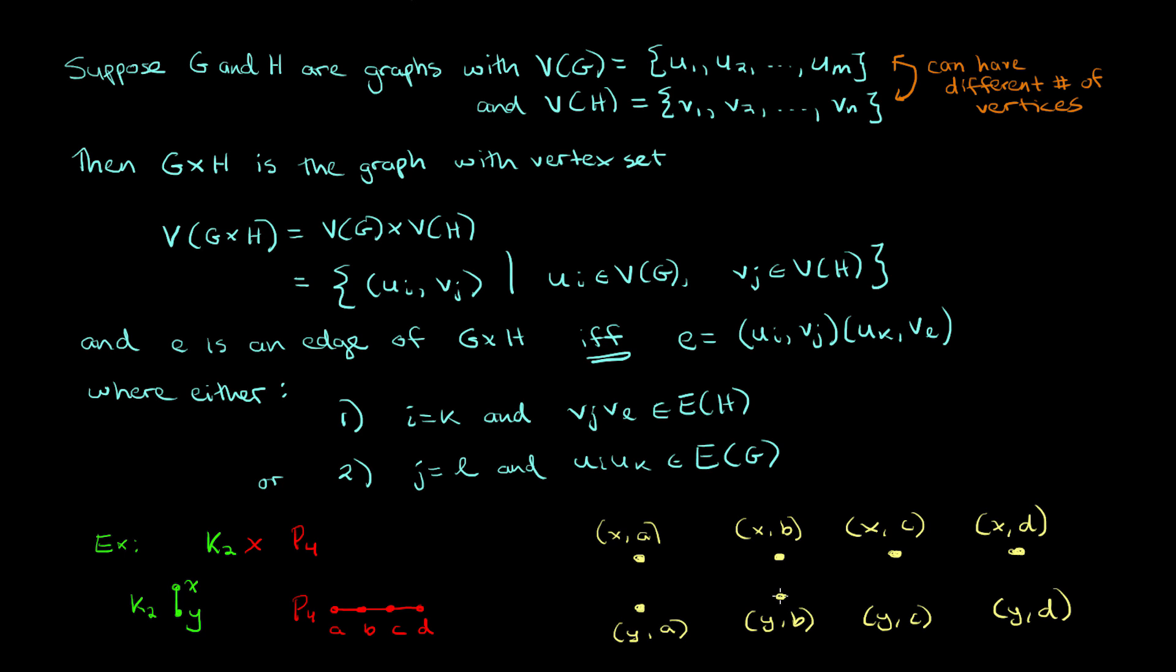Now let's think about the edges in this new graph, which happen because of the graph G. So this is where we have the second component of the vertex label fixed. In other words, if you take a look at vertex xa and ya, we know that those have to be adjacent in the product because x and y are adjacent in our graph G, which is K2. Similarly, we fill in these other three green edges.